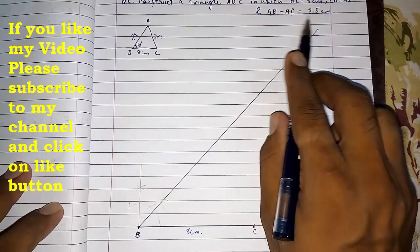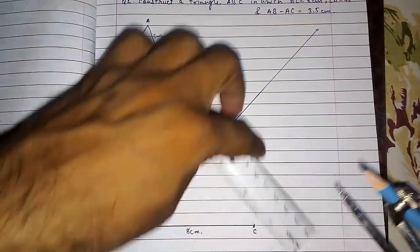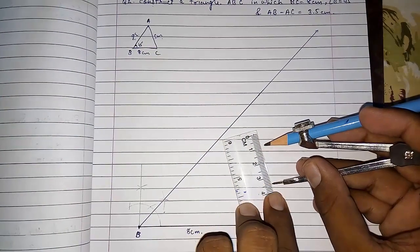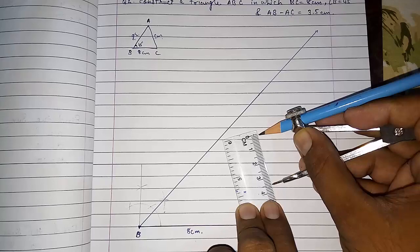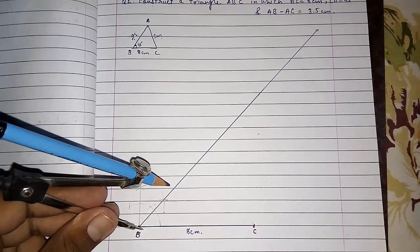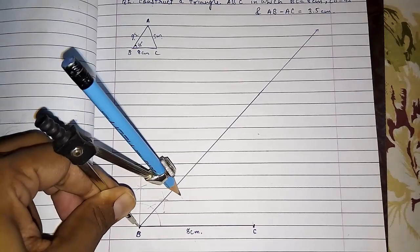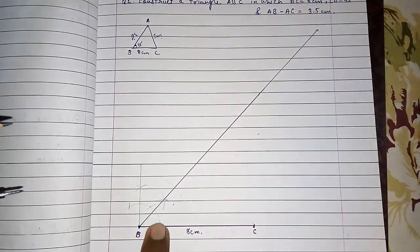Now this is 45 degrees. They told us the difference is 3.5 centimeters. So here also we have to make an arc of 3.5 centimeters. That we are going to take here to be 3.5 perfectly. This is 3.5.